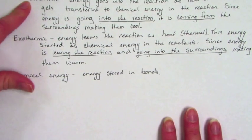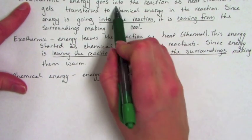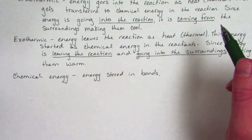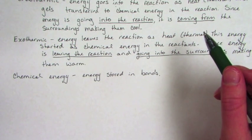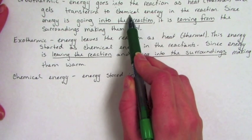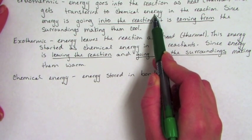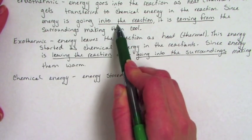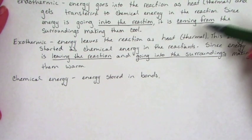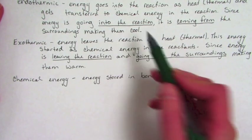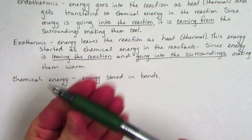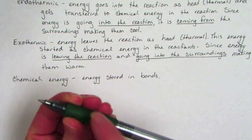Endothermic: the energy goes into the reaction as heat. Generally, we're putting something over a Bunsen burner or a hot plate. We're giving some heat and it gets transferred during the chemical reaction into chemical energy. Since the energy is going into the reaction, it's coming from the surroundings, so the surroundings are losing energy. This makes the surroundings cold — if you held a beaker with the reaction going on, your hand would feel cold because the energy is leaving your hand and going into the reaction.